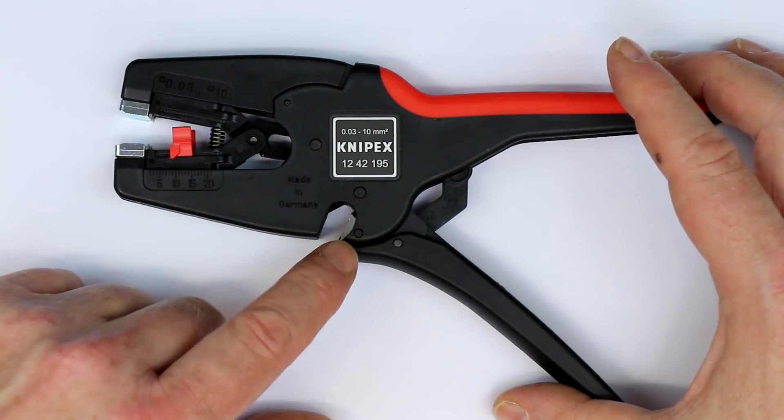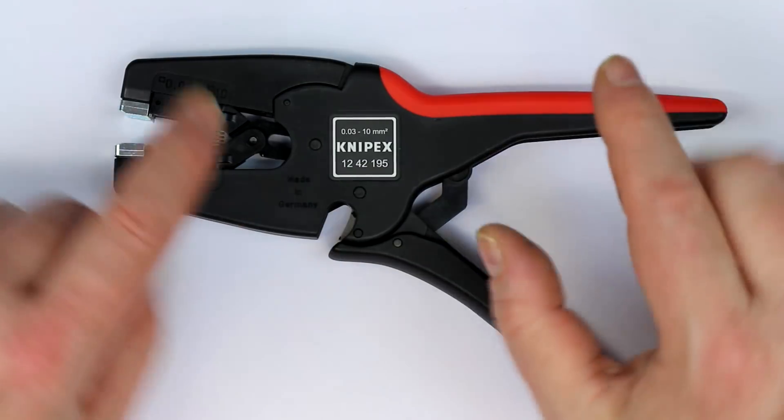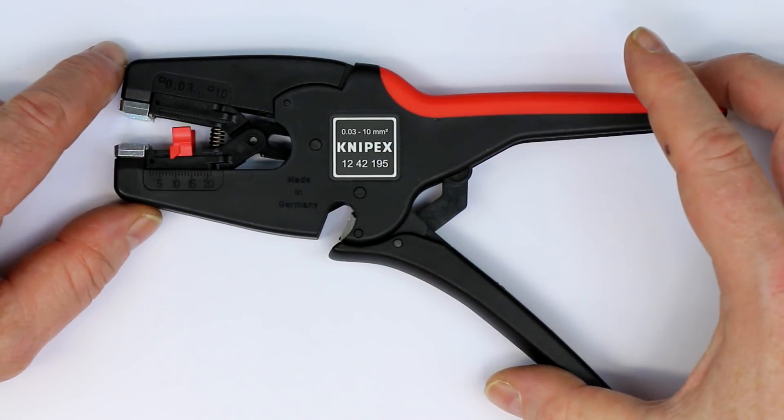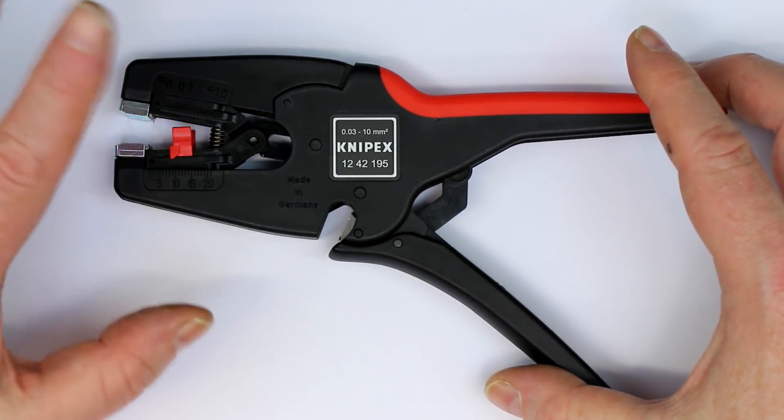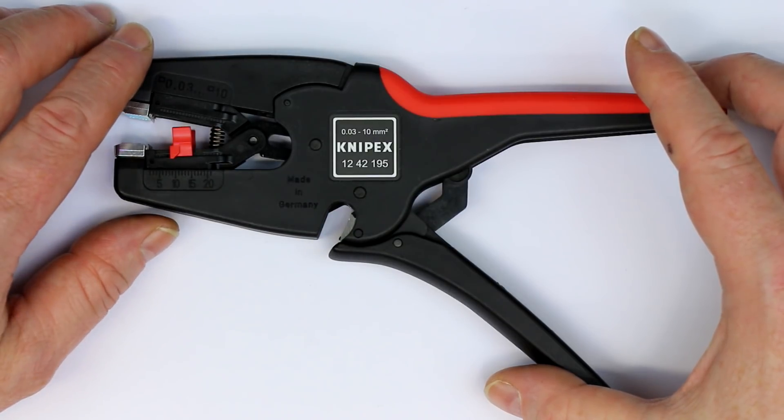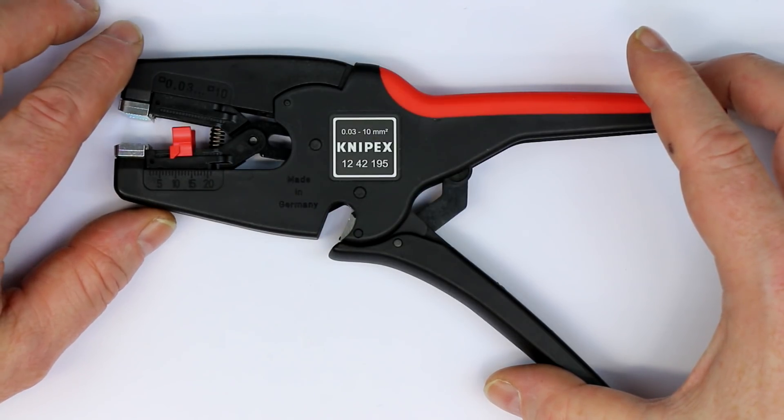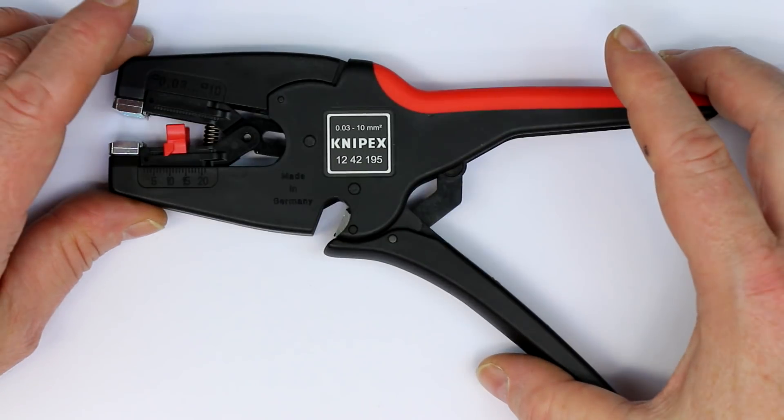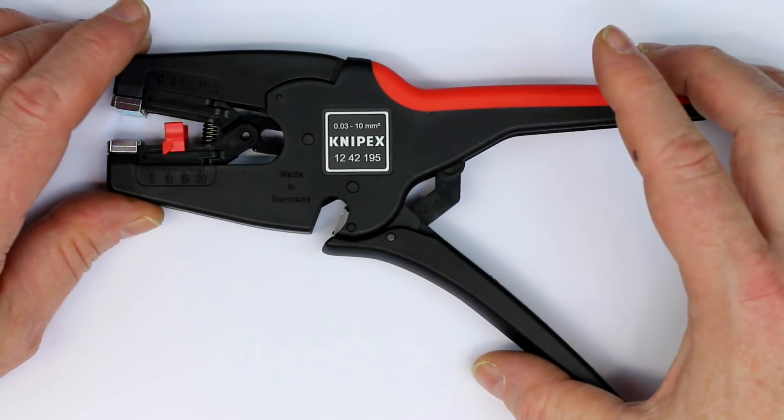Quite a lot more expensive than the winners we had in the first video. It's around 70 euros here in Germany. Anyway, Jan thought that it would be worthwhile to check this wire stripping tool, an automatic stripper as you can see.